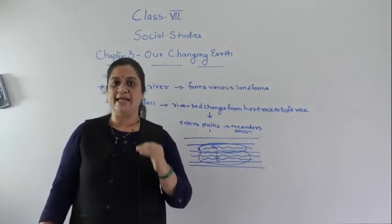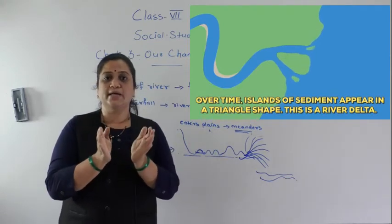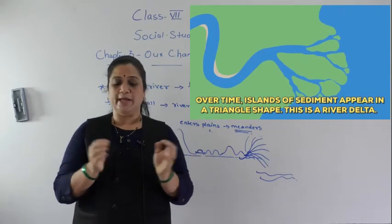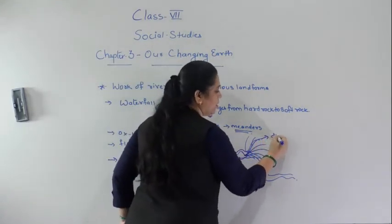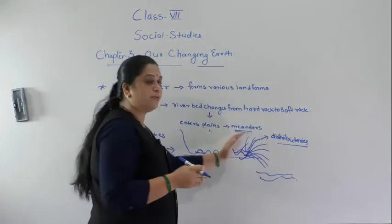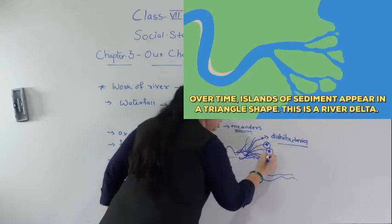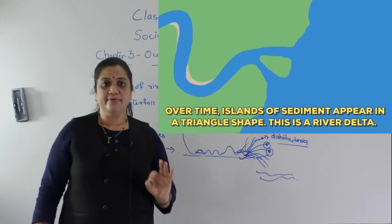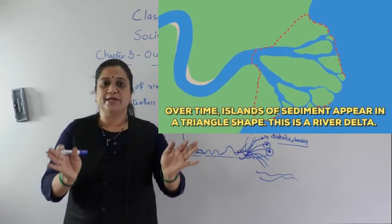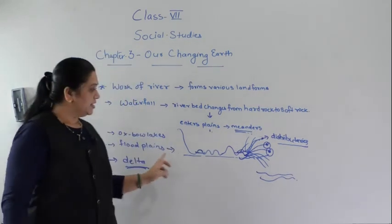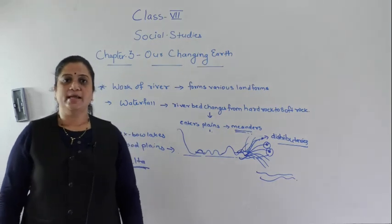When the river approaches the sea, its speed decreases and it breaks up into a number of smaller streams called distributaries. These distributaries carry sediment and deposit it at the mouth of the sea, thus forming a delta. A delta is a landform at the mouth of the river formed by deposition of sediments carried by the distributaries. So the river flows in three courses, forming different landforms. Today we studied about the work of the river.